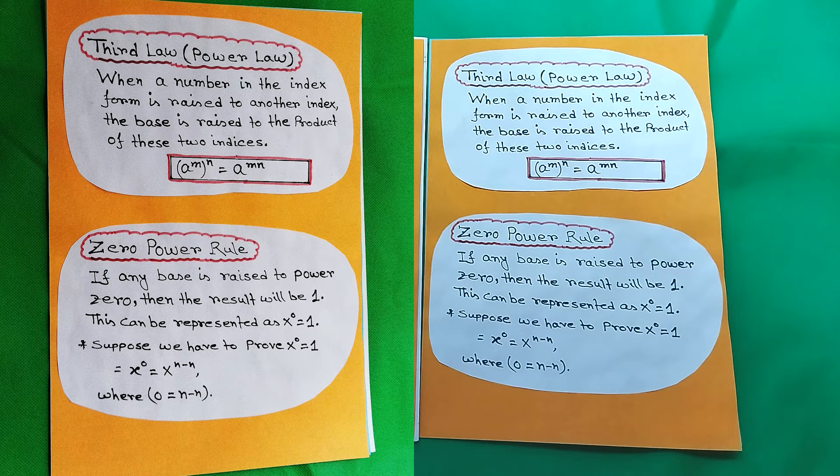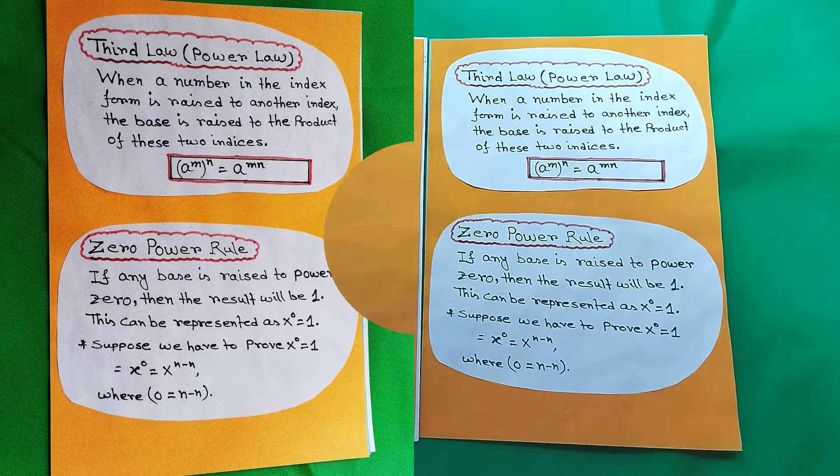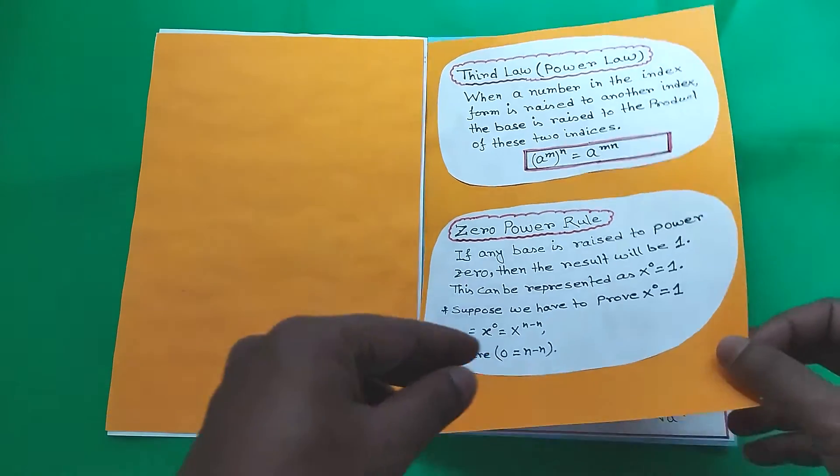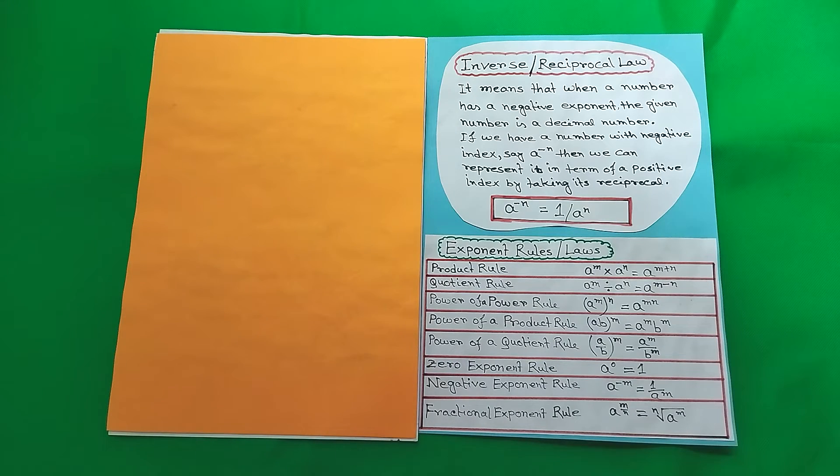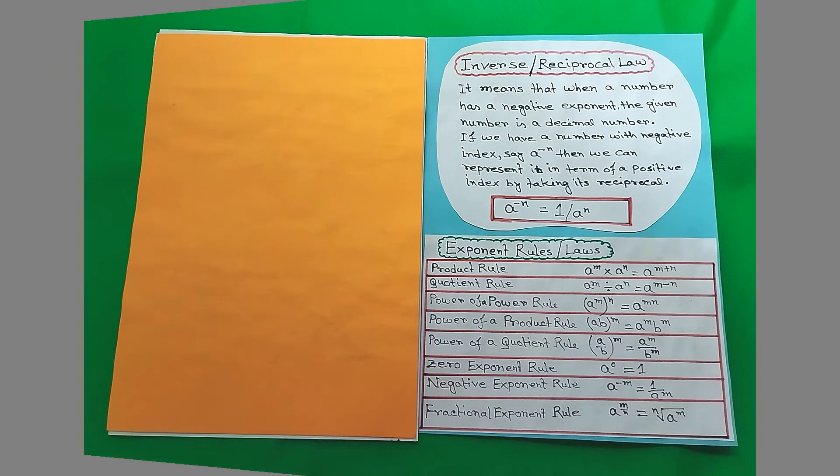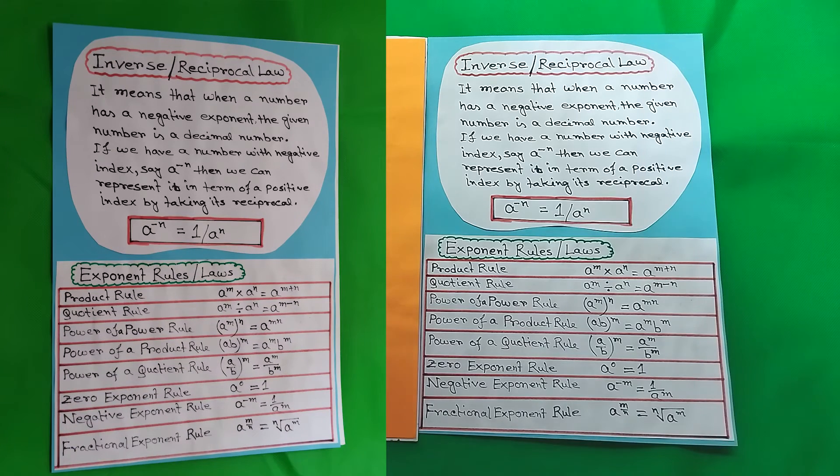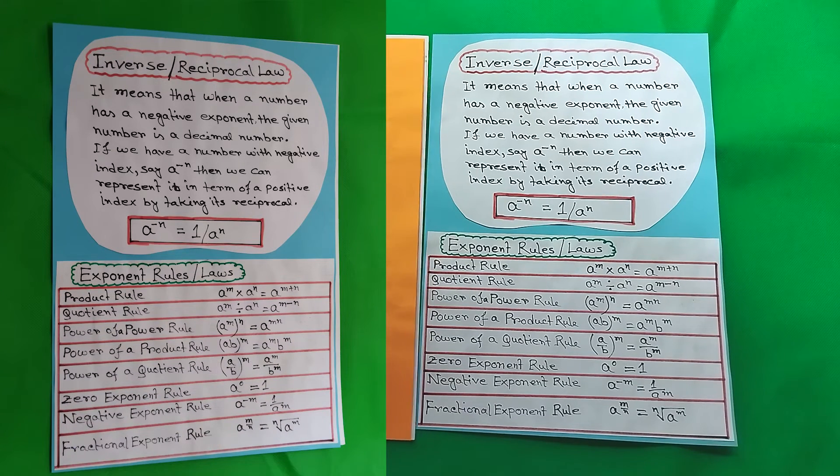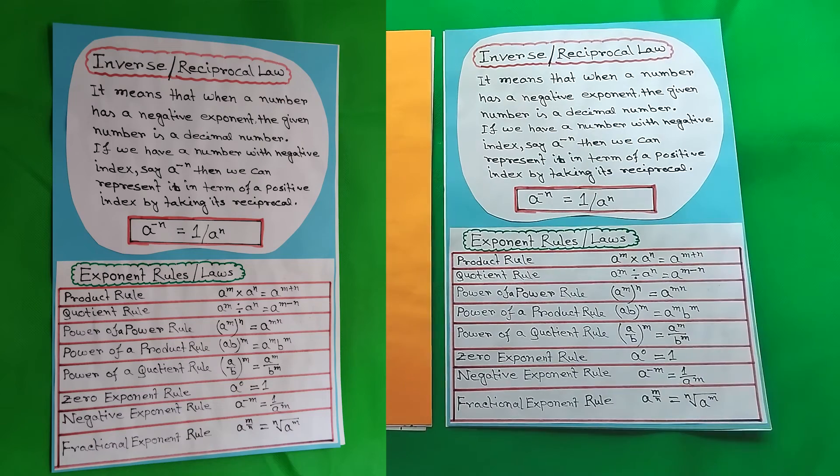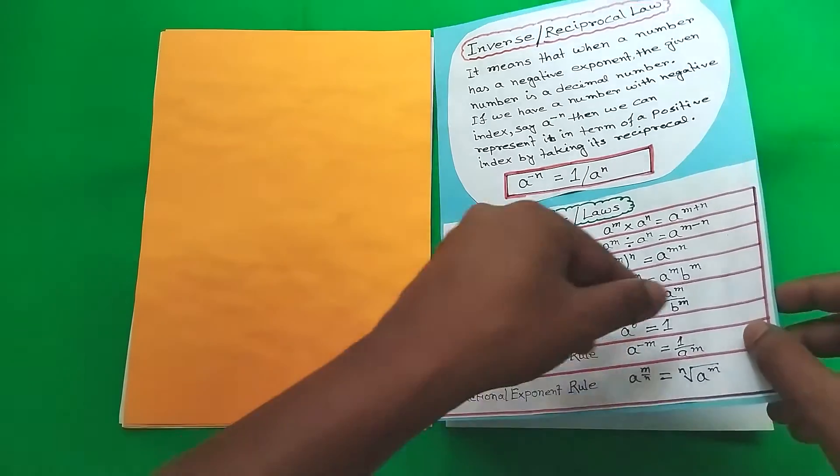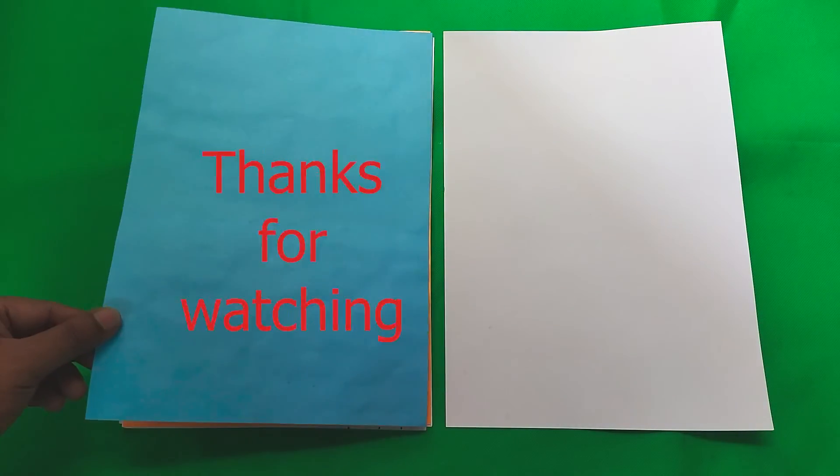Now we have the Zero Power Rule, and the fifth and final law, the Inverse or Reciprocal Law. The formula is here, and the description is written. Below that we have a chart for all the laws. Thanks for watching this video and I'll see you in the next one. Bye!